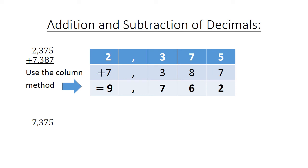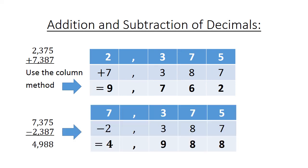For subtraction, we do exactly the same using the column method. Example: 7,375 minus 2,387. Start at the last digit: 5 minus 7 is not enough, so borrow one from the 7 — 15 minus 7 equals 8. Now there is 6 left; not enough, so borrow from the 7 — 16 minus 8 equals 8. Then we have 2; borrow again from the 7 — 12 minus 3 equals 9. And 6 minus 2 equals 4.